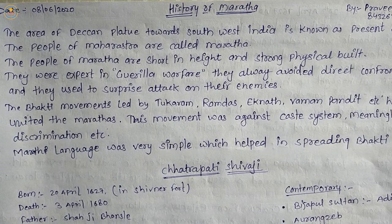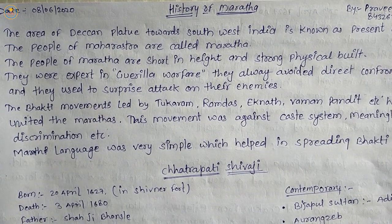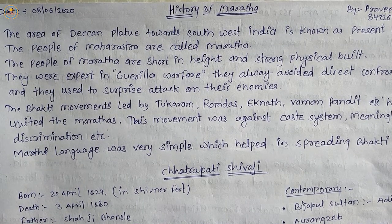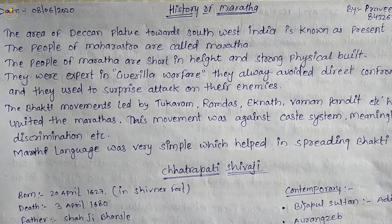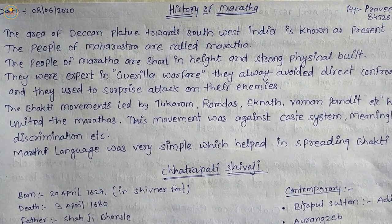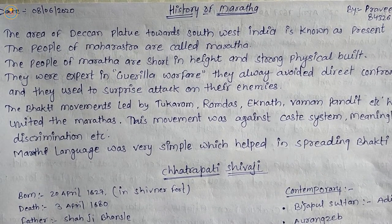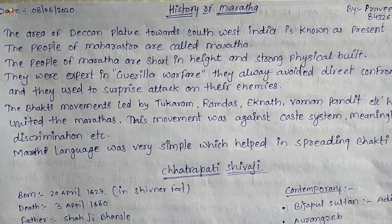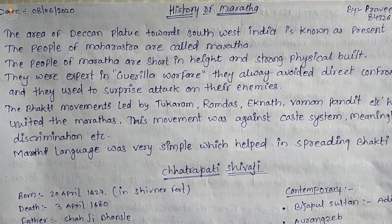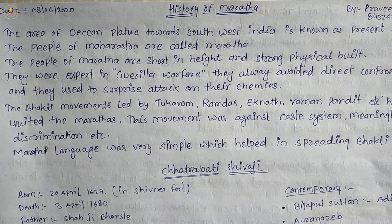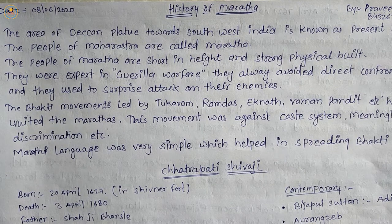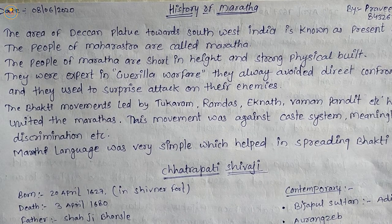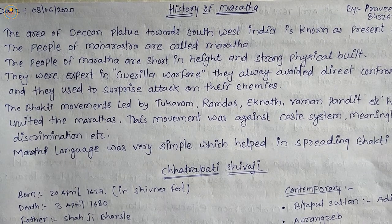These states were the Gaikwad of Baroda, the Holkar of Indore and Malwa, the Scindia of Gwalior and Ujjain, and the Bhosle of Nagpur, and the Puar of Dhar and Dewas. A large portion of the Maratha Empire was coastline, which was secured by the potent Maratha navy under commanders such as Kanhoji Angre.